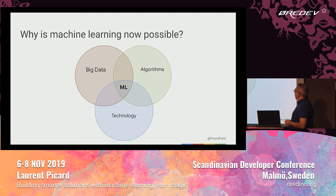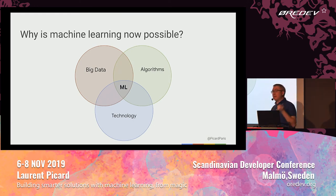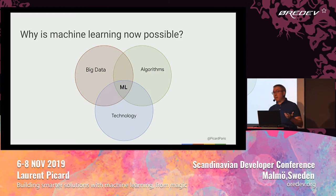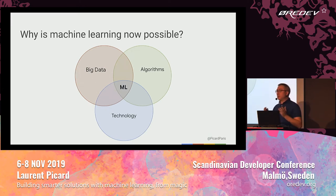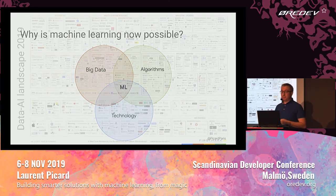Why does machine learning work now? First, we inherit centuries and decades of science — algorithms from mathematics, physics, biology, chemistry, everywhere. For decades we've been able to handle big data; we have databases, we can store a lot of files. And for the last 10 years, we now have the technology to complete this set: high computing power. With these three items, this is why machine learning is useful and works well.